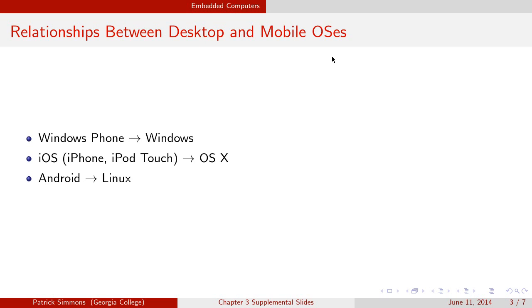There is a relationship between the operating systems that run on desktop and laptop computers and those that run on mobile phones. Windows Phone is a version of Windows. iOS is a version of OS X, the Macintosh operating system. And Android is a version of Linux. So the three most common desktop operating systems are also the three most common mobile phone and tablet operating systems. However, the order is exactly reversed. Windows is the most popular desktop OS, followed by OS X, then Linux. Android is the most popular mobile phone OS, followed by iOS, then Windows Phone.